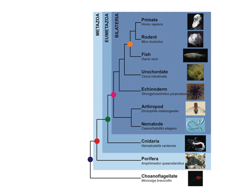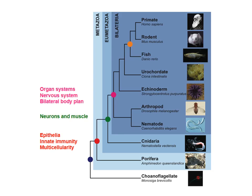These include multicellularity, immunity, specific tissue types like epithelia, neurons and muscle, organ systems like the nervous system, and different body plans such as the bilateral versus the radial body plan.